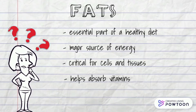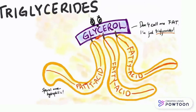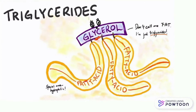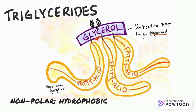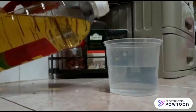The main type of fats that you get from food is called triglycerides. Triglycerides consist of one glycerol unit and three fatty acid chains. It is a non-polar molecule, or simply put, hydrophobic, which means that it definitely will not mix with water.